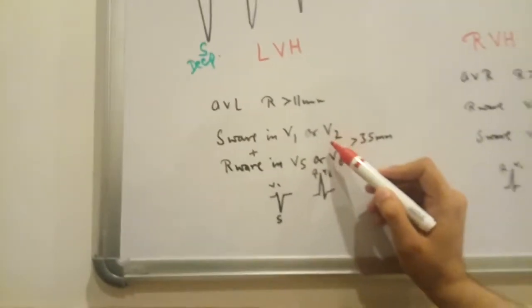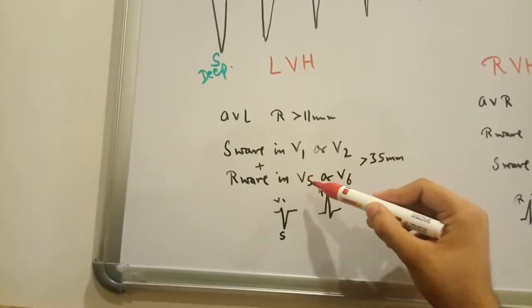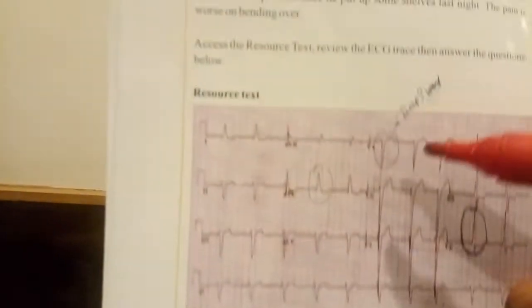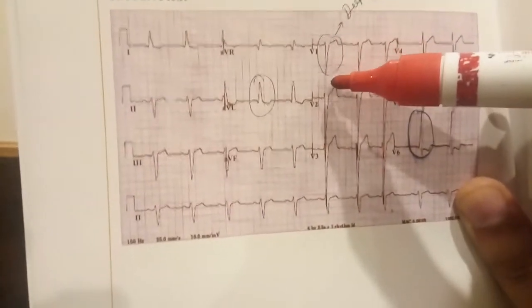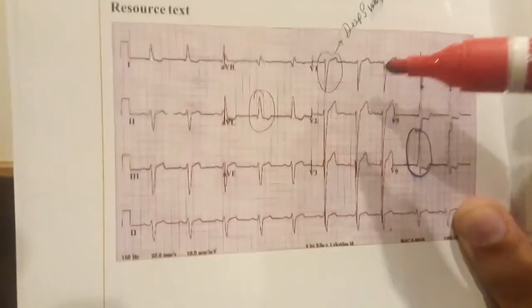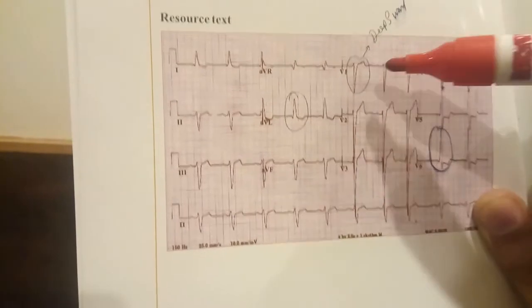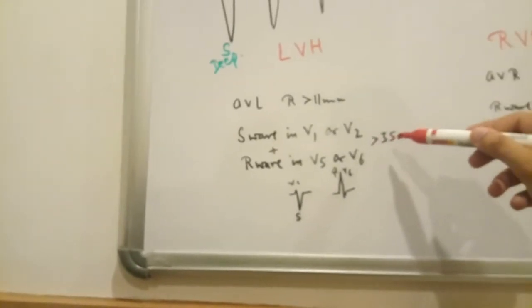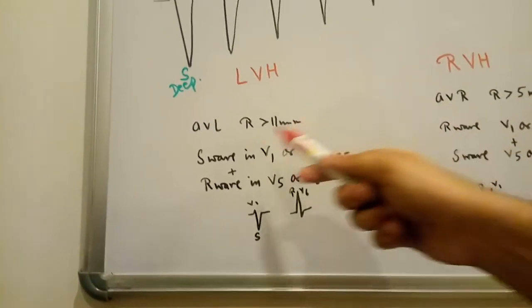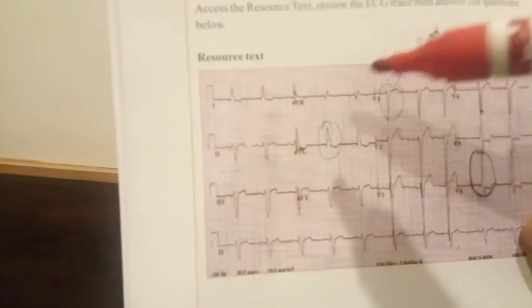And in V1 and V2 lead we see V1 or any V2. So S wave and plus R wave in V5 or V6 it must be more than 35. See here, we see the deep S wave. How many large boxes? 1, 2, 3 and more. So it is nearly 16, 18 in V1. So we need to plus with V6. V6, 1, 2, 3, 4. 16 and 4, 20. It is nearly 36. So V1 plus V5 V6 it is more than 35. So this criteria is matching here. So that is where we diagnose the left ventricle hypertrophy. This ECG shows the left ventricle hypertrophy.